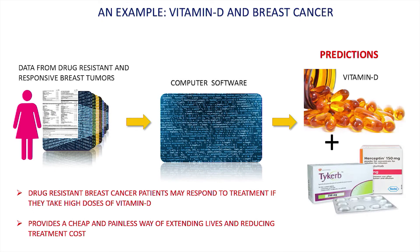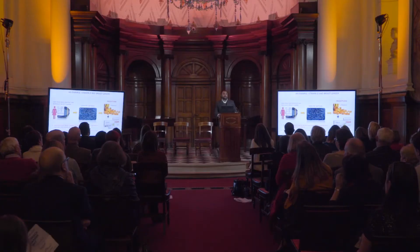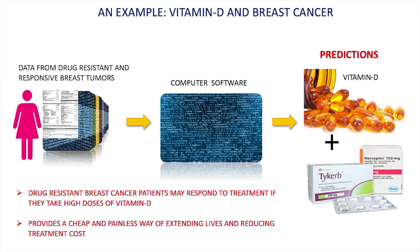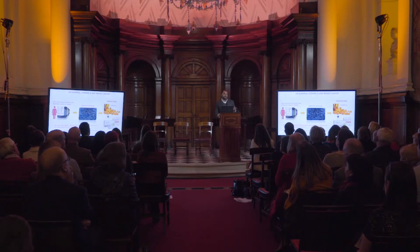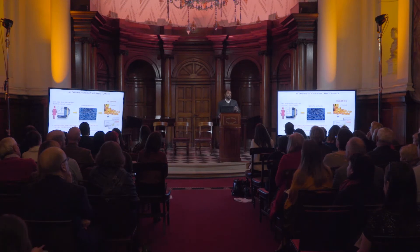To see whether this kind of approach will actually work for designing treatment for cancer patients, we used this software to compare detailed readings from tumors taken from a group of breast cancer patients, some of whom responded to the drug Herceptin and some of whom didn't. The software compared the data from these two different groups of patients and predicted that patients who typically do not respond to Herceptin may respond to it if they take high doses of vitamin D in addition to the treatment.